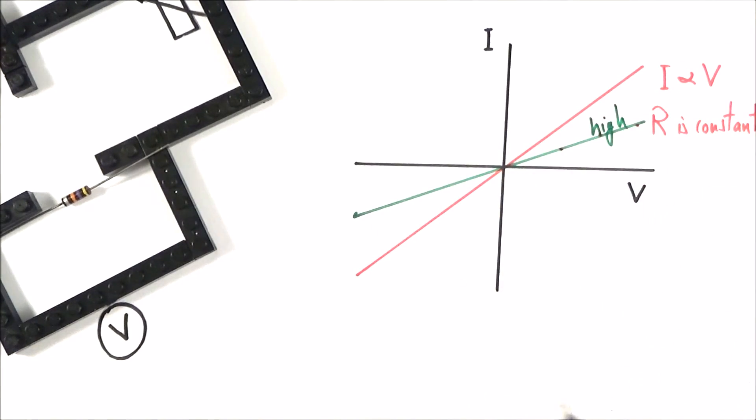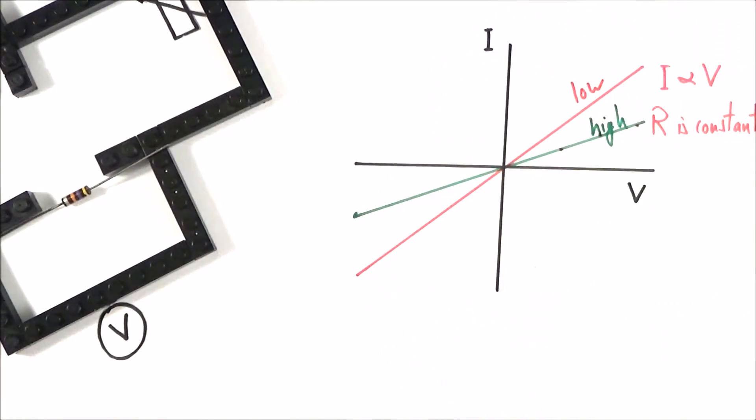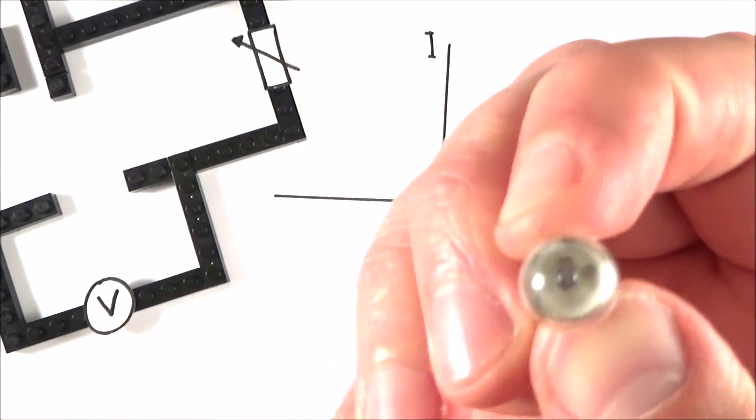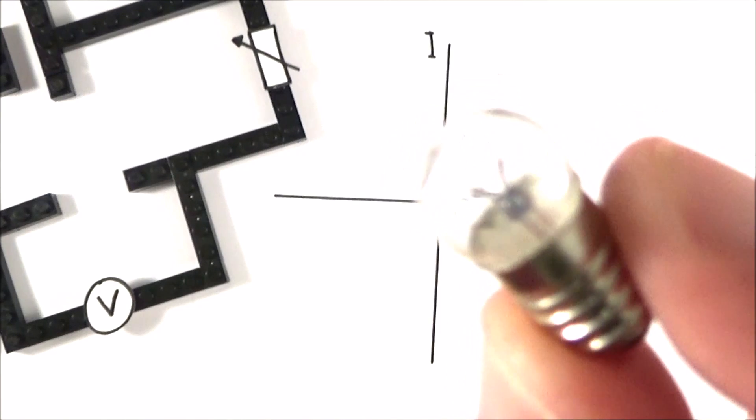Whereas before it was a lot lower. Not everything can be made out of very nice simple resistors. Here we have another component and here we have a filament bulb.